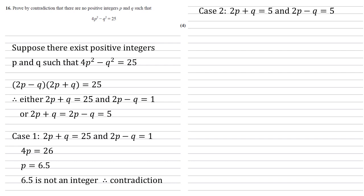Let's do the same thing for Case 2. Both of them are equal to 5. Again if we add our simultaneous equations together, we get that 4p = 10 and p = 2.5. So again we've got a number that's not an integer. Hence it's a contradiction.